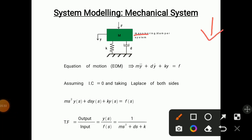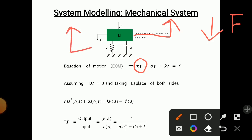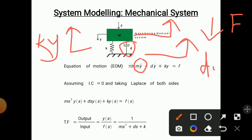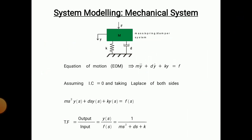When you apply force, the mass has inertia in the opposite direction: m·ÿ. The spring gets compressed and the spring force acts in the opposite direction: k·y. The damper also provides resistance in the opposite direction: d·ẏ. Adding all these forces gives m·ÿ + d·ẏ + k·y = F. Now assume initial conditions at zero and take the Laplace transform of both sides.